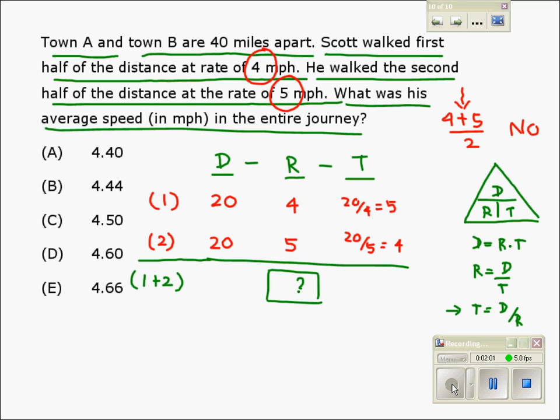Now we can add distance 1 and distance 2 and write the total distance of 40 here. We can also add time 1 with time 2 and write the total time of 9 here.